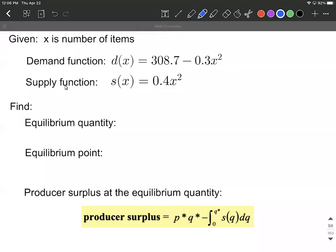All right, on this problem we're given a demand function and supply function. Our goals are figuring out the equilibrium point, which is simply where these are equal to one another, the equilibrium quantity, and then we're gonna use the equilibrium point to help us find producer surplus this time, formula given down below.